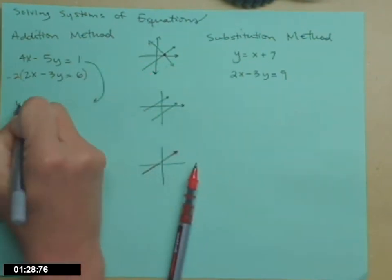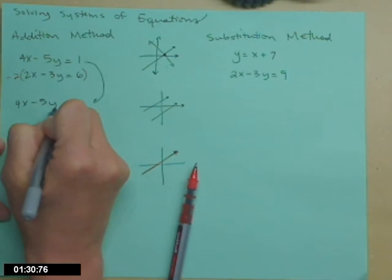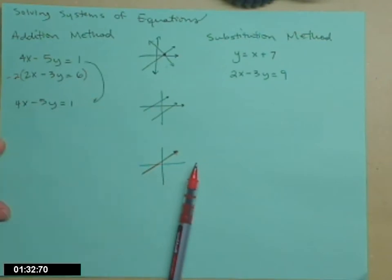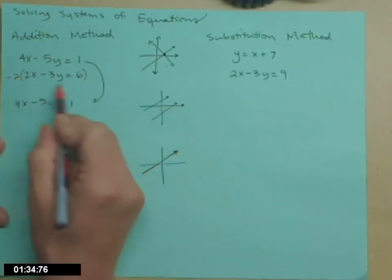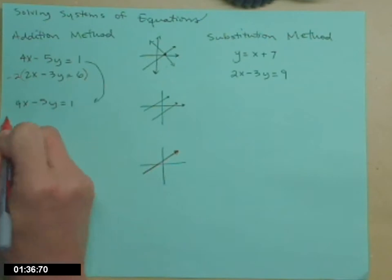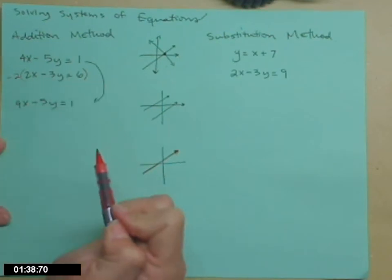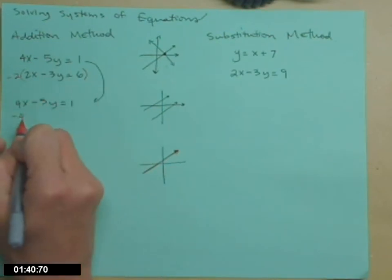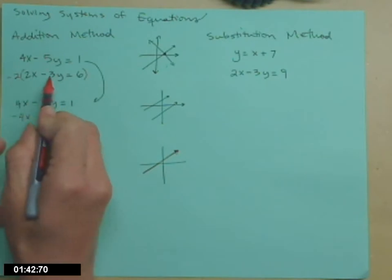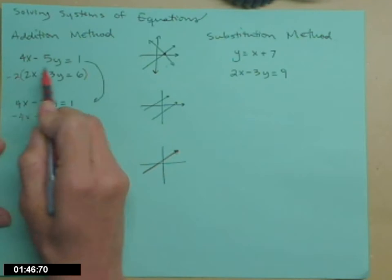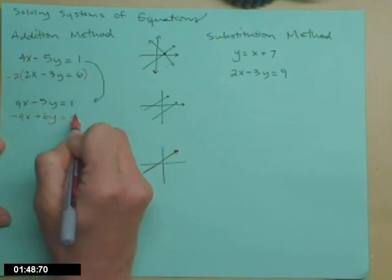So that'll be 4x minus 5y equals 1. My now scaled second equation, the negative 2 multiplies. I'm going to multiply both sides of the equation by it so it doesn't change. So negative 4x, negative 2 times negative 3y makes that positive 6y. Negative 2 times negative 6 is negative 12.